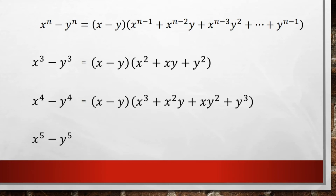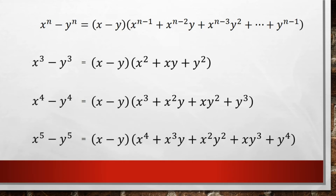If we continue this with x to the 5th minus y to the 5th, we're still going to have the x minus y factor in front. Then x will start at exponent 4, so it'll be x to the 4th, then x cubed, x squared, x, and then nothing. While y will be nothing, y, y squared, y cubed, and y to the 4th. We combine that, and that is how it's factored.